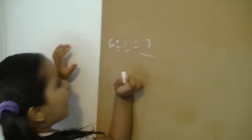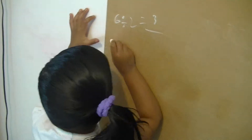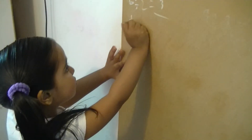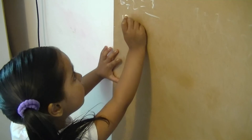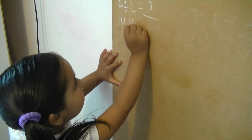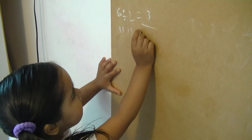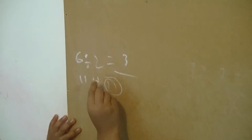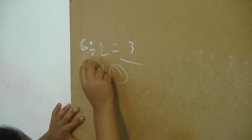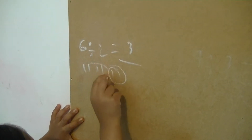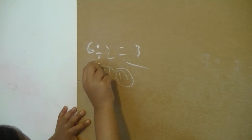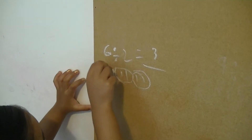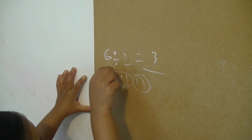How can I explain? You have to do six lines: one, two, three, four, five, six. Giving us two per group — one group, two groups, and three groups.